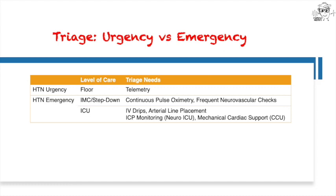Similarly, if a patient has a low to moderate suspicion for neurologic effects outside of headache, you can place them in the IMC for more frequent neurovascular monitoring. However, if a patient requires continuous drips or arterial line placement, they will likely require the ICU — ditto for even more advanced support including invasive ICP monitoring or mechanical cardiac support. Also, if there are severe complications such as acute aortic dissection, refractory chest pain, respiratory distress, or profoundly altered mental status, your patient will likely require ICU care.